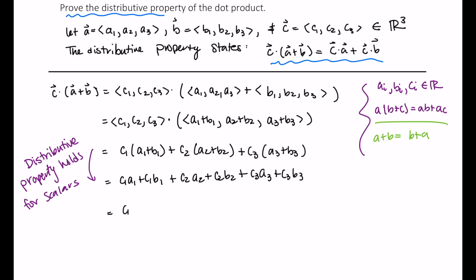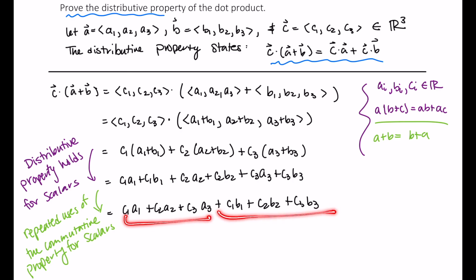This is C1A1, plus C2A2, plus C3A3, plus C1B1, plus C2B2, plus C3B3. And this is repeated applications of the commutative property. That is, I would have swapped, not these ones. These ones would have had to have been swapped out as would have these ones, and I'd have to do more swapping to get all of these together and all of these together.